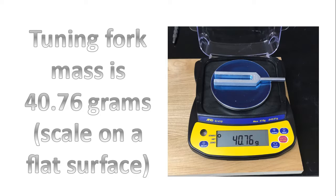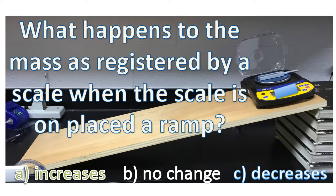This is when the scale is placed on a flat surface. And here are your three choices when we take the exact same tuning fork and place the balance on a ramp. Will the mass, as registered by the scale, increase, no change in the mass, or decrease?